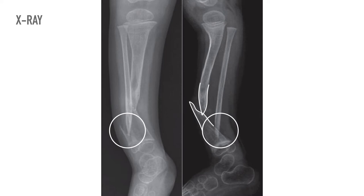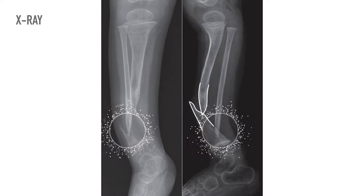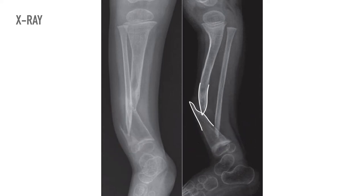Sclerosis and obliteration of the medullary canal at the pseudoarthritic interval are also observed. Usually the fibula is unaffected, although it may display pseudoarthrosis at the same level. The distal tibial segment is usually angulated backwards, resulting in equinus of the foot.